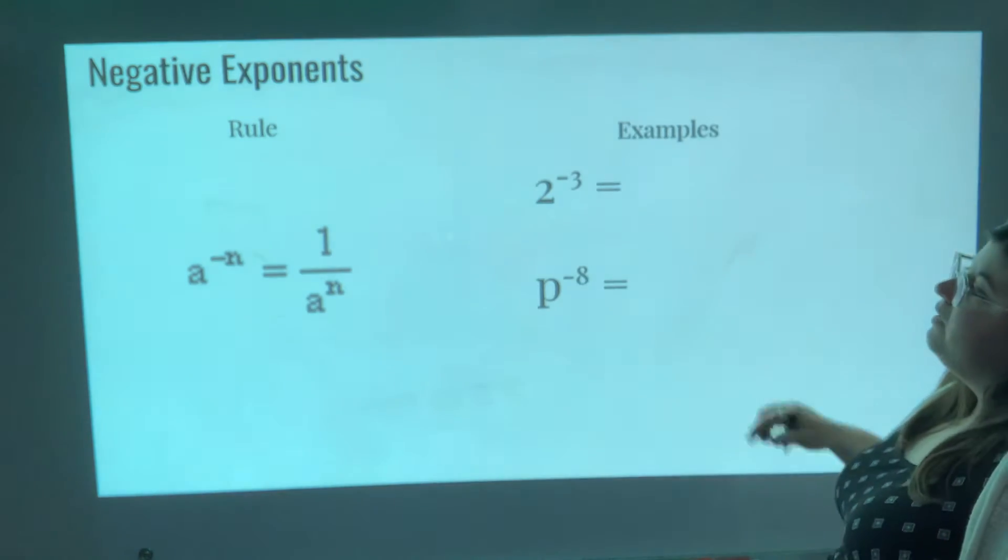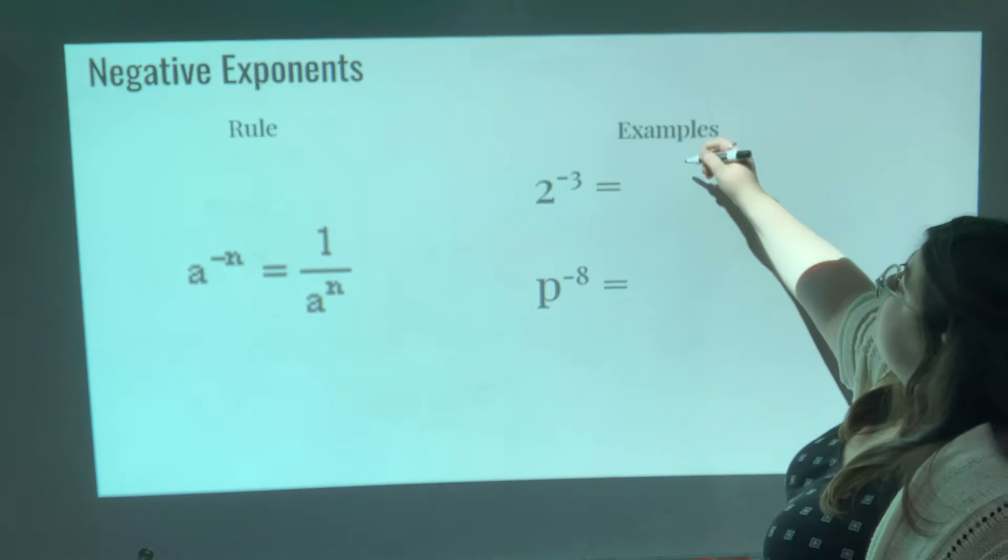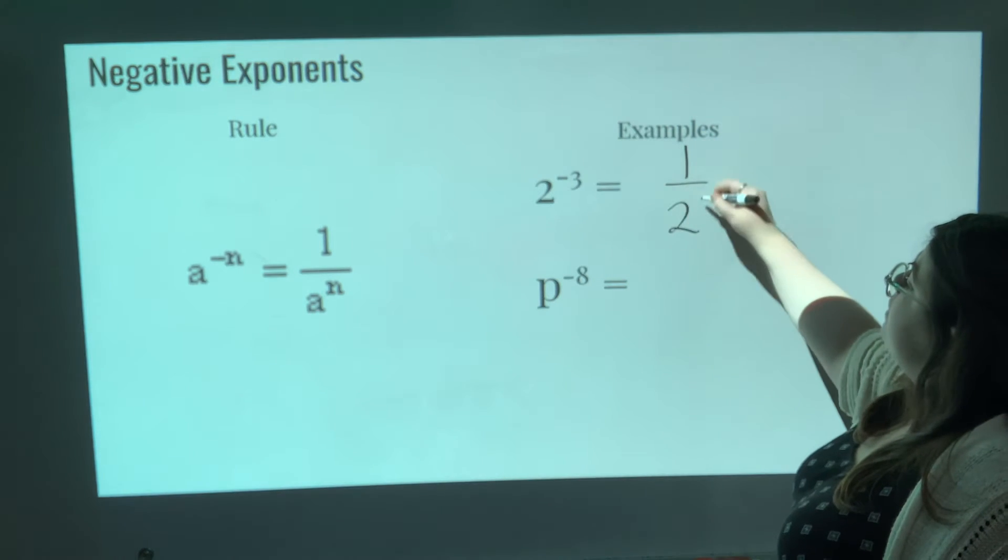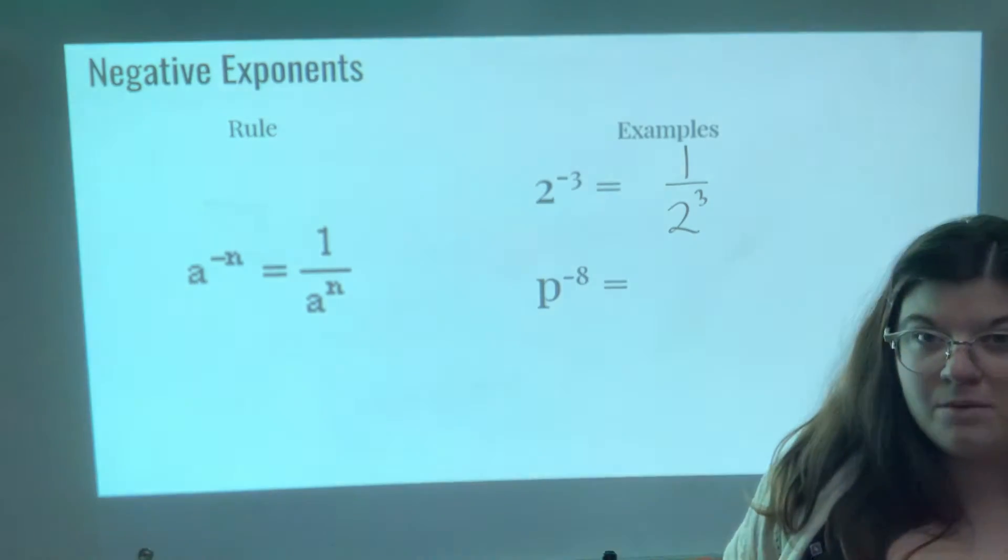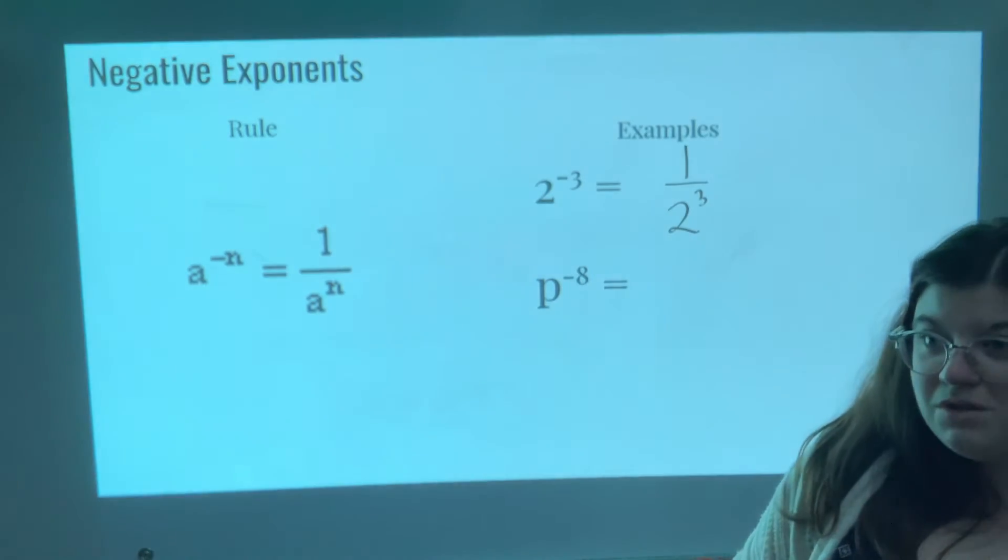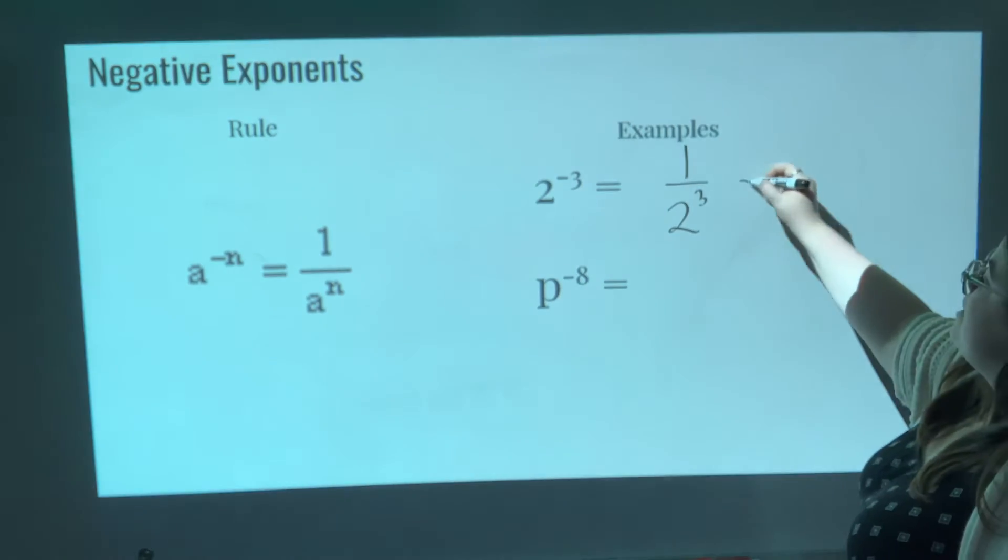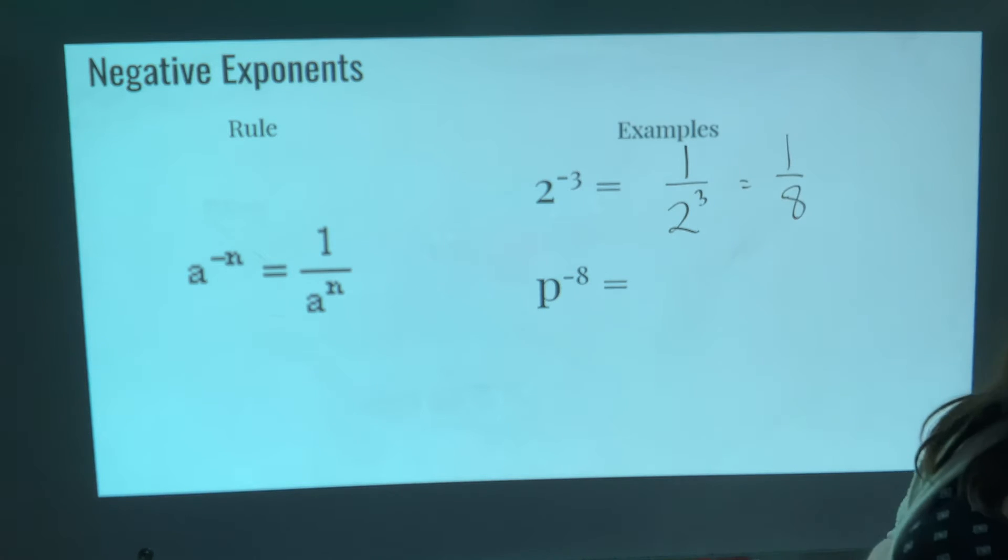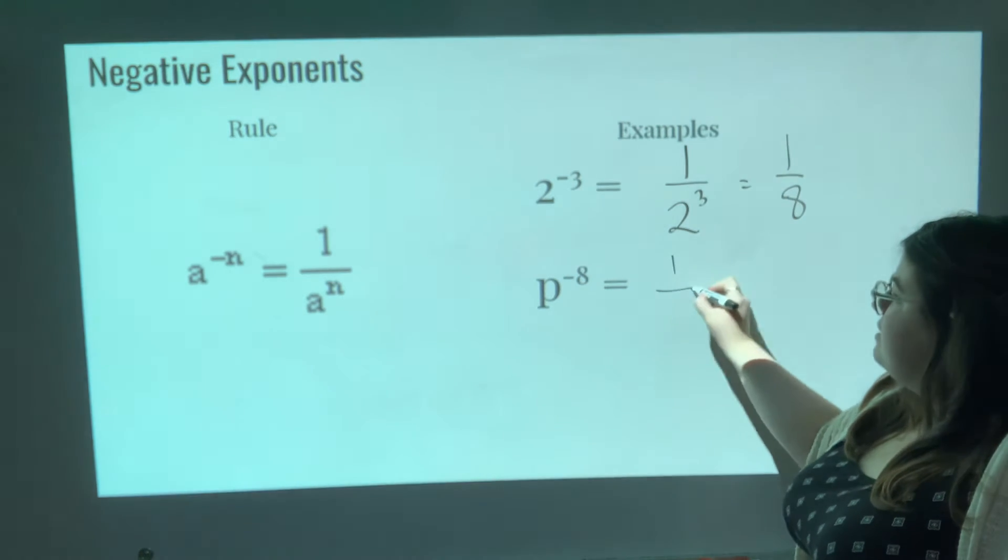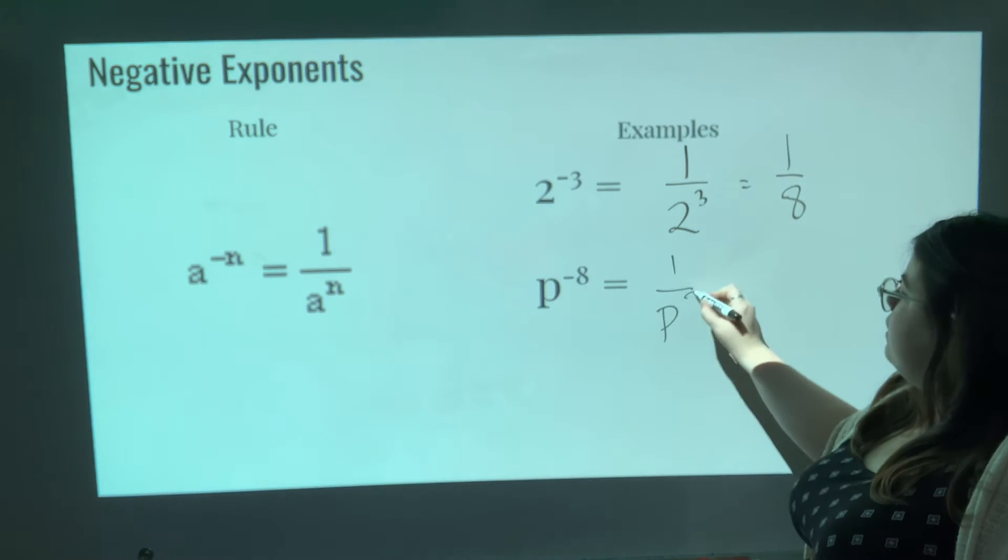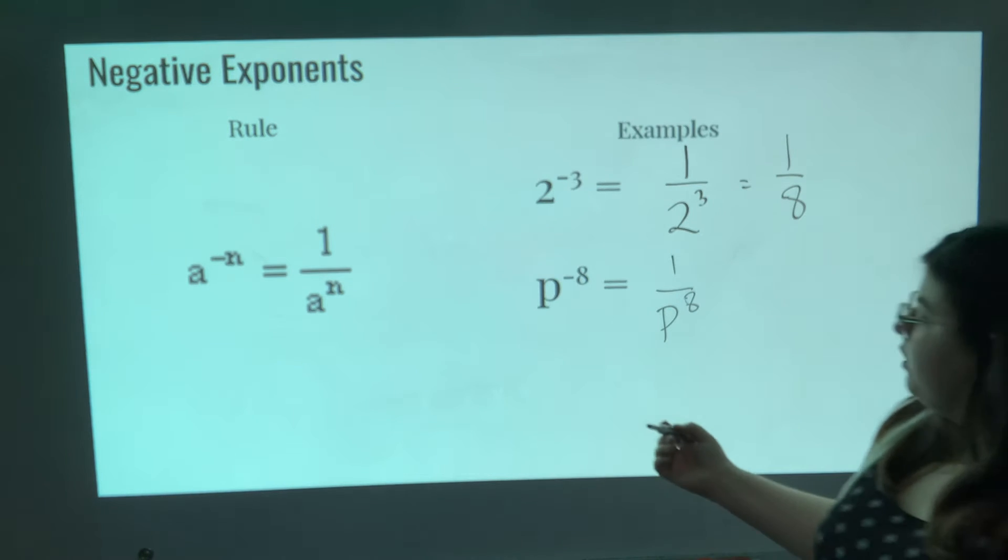So 2 to the power of negative 3—it's got a negative, it's not happy, it wants to flip around. So it's 1 over 2 to the 3rd power, and I can simplify that even more. I know 2 to the 3rd power is 2 times 2 times 2, which is 8. So really, it's the same thing as 1 over 8. P to the power of negative 8? Same thing as 1 over P to the power of 8. I'm going to put one more example up there.